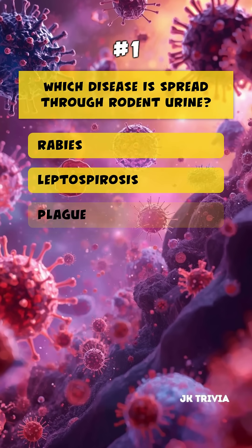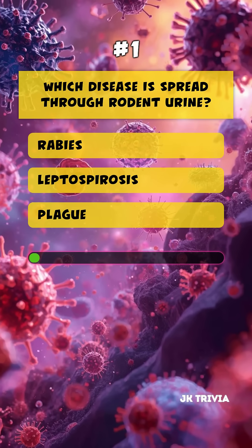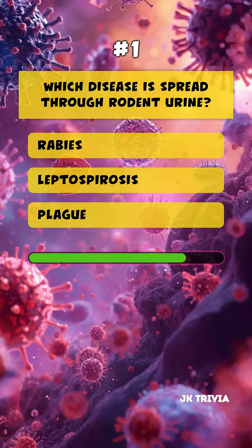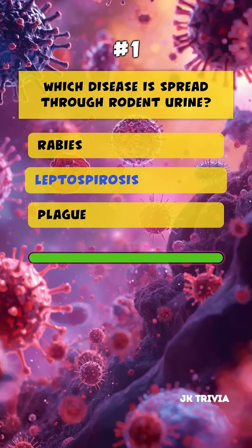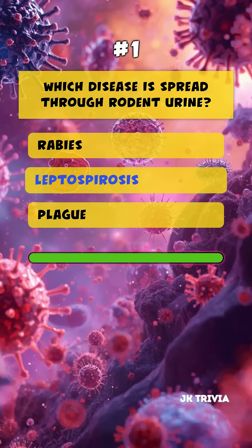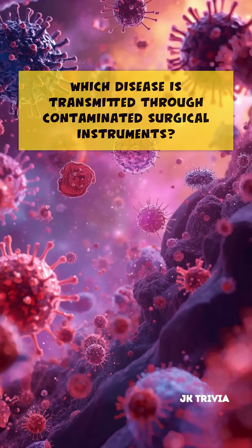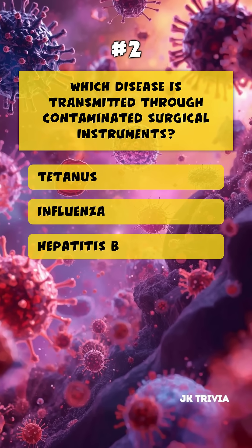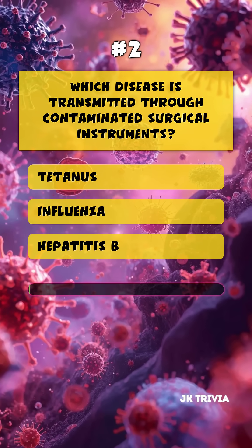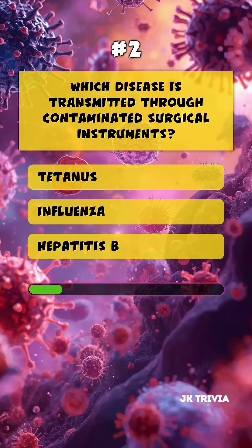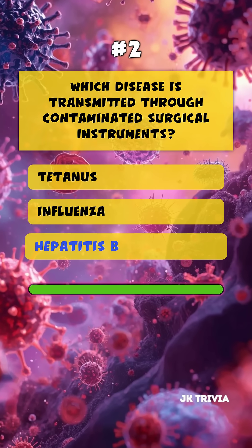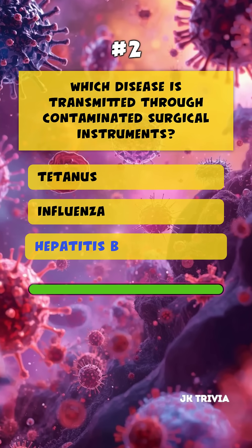Which disease is spread through rodent urine? Leptospirosis. Which disease is transmitted through contaminated surgical instruments? Hepatitis B.